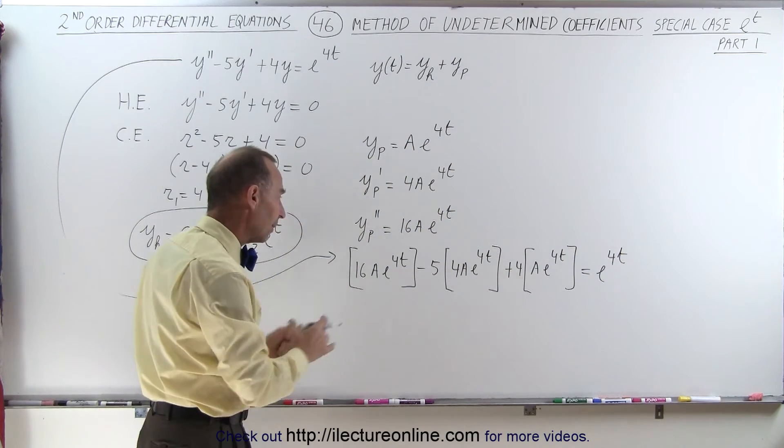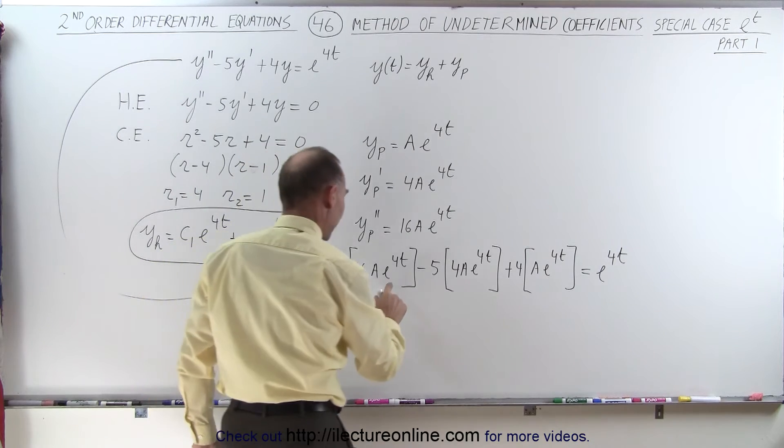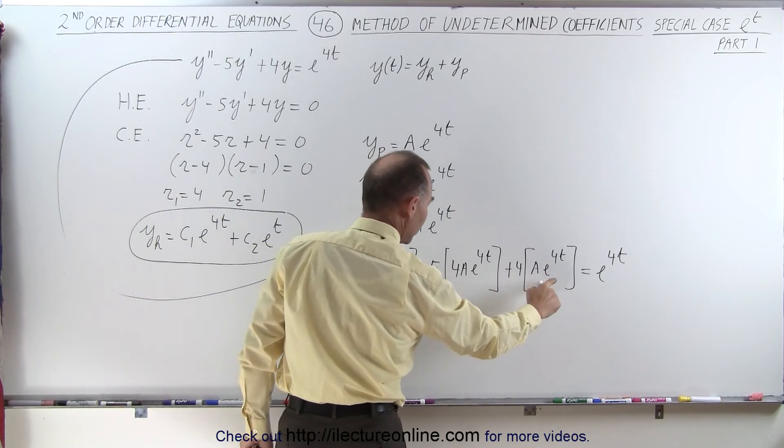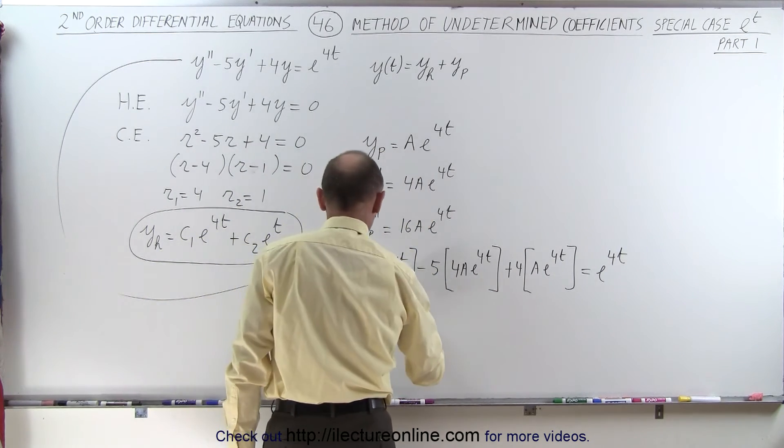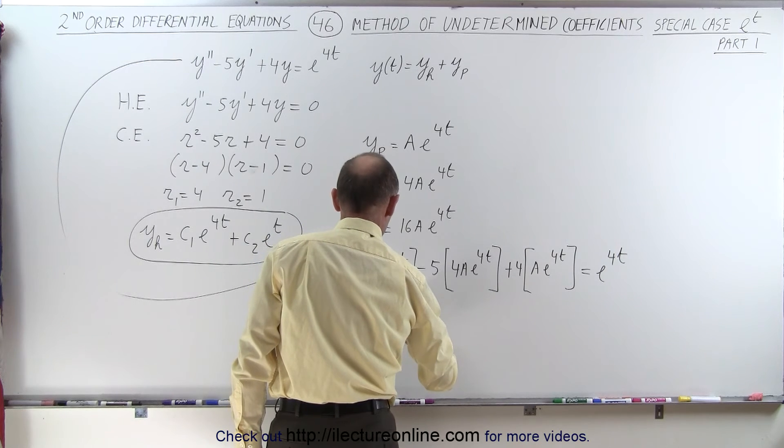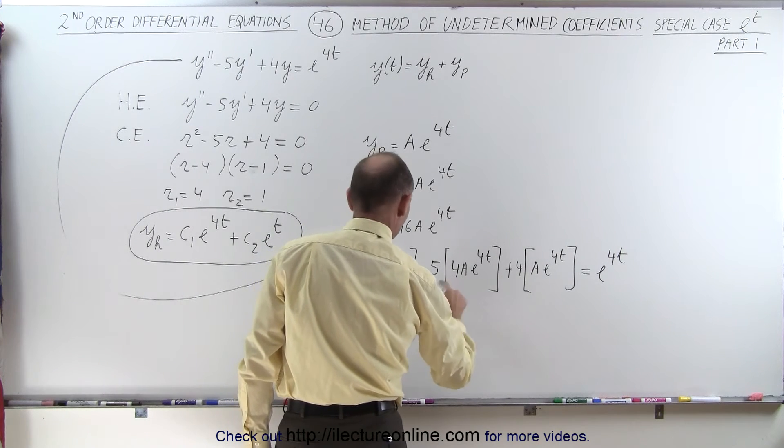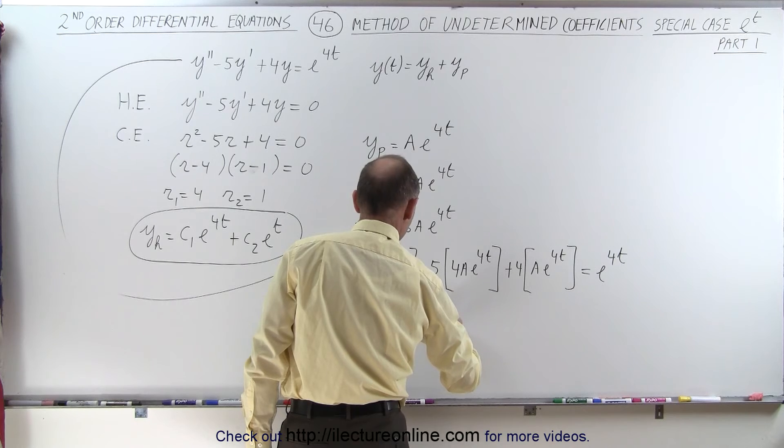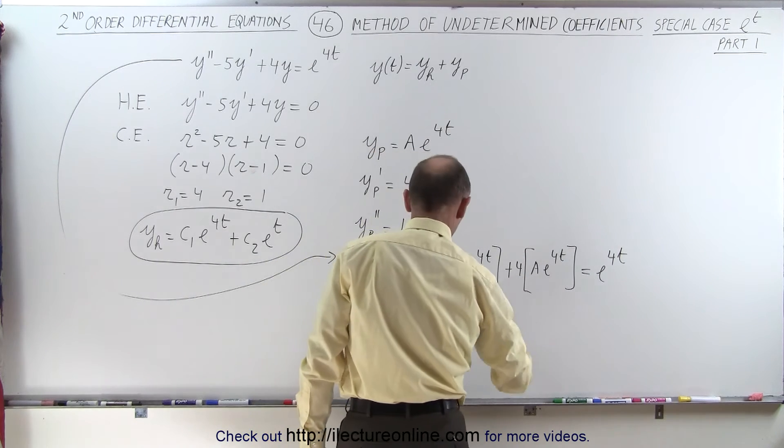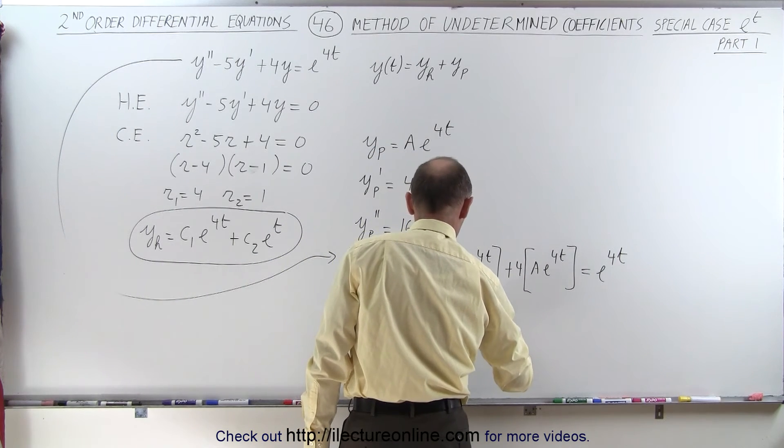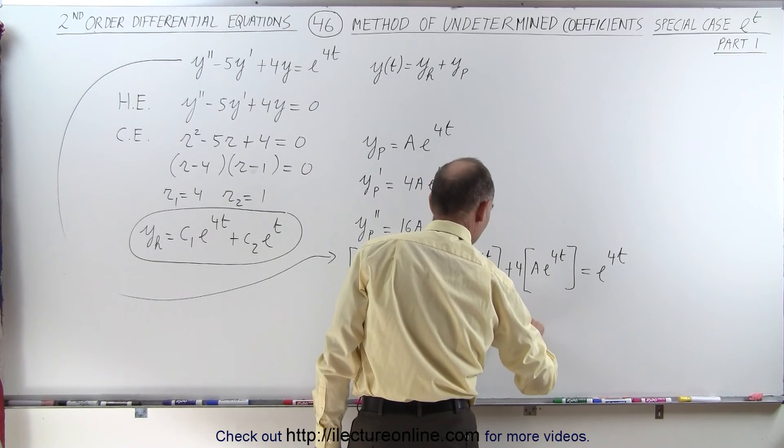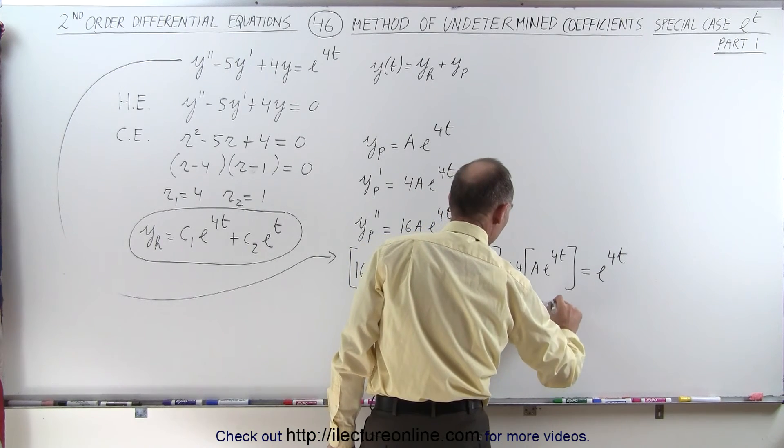All right, let's combine all terms. So we have an e to the 4t, e to the 4t, e to the 4t. So this becomes 16a minus 5 times 4, which is minus 20a, plus 4a, multiplied times e to the 4t. And that should equal e to the 4t.